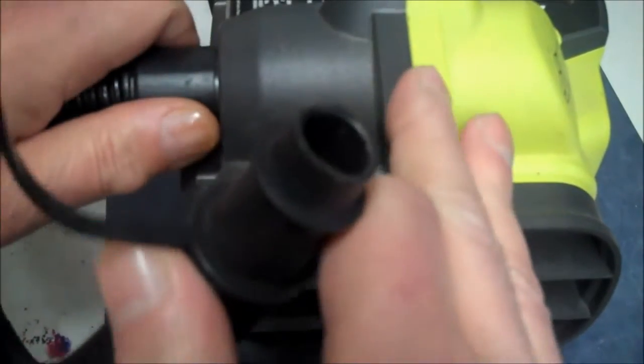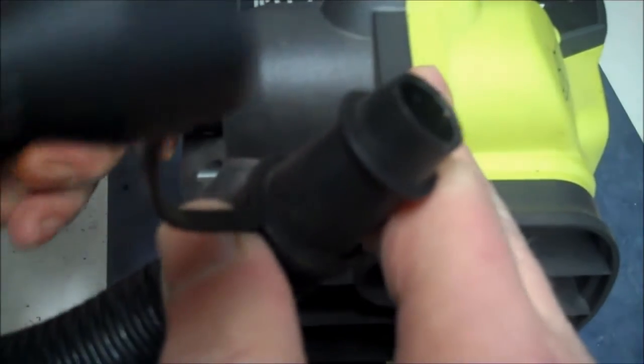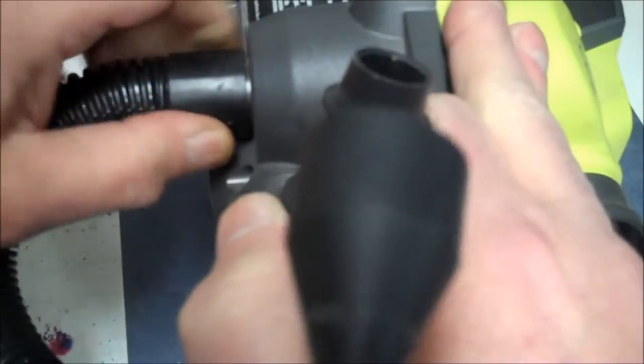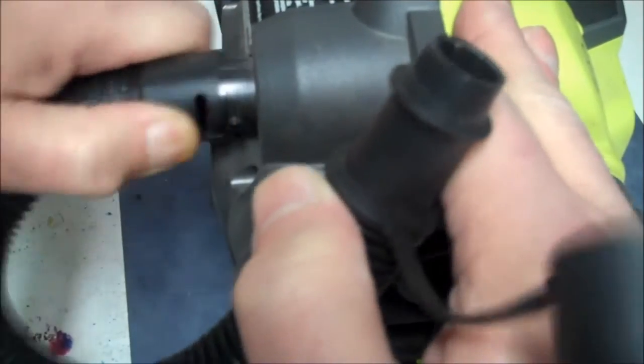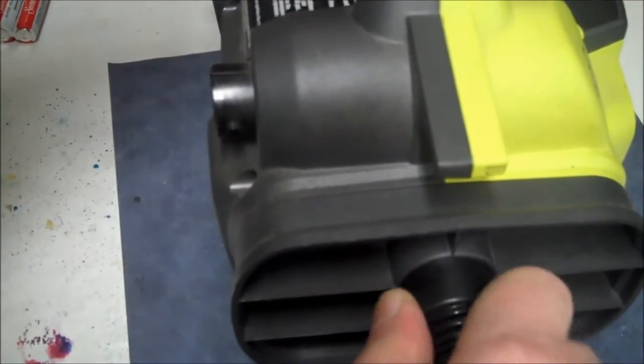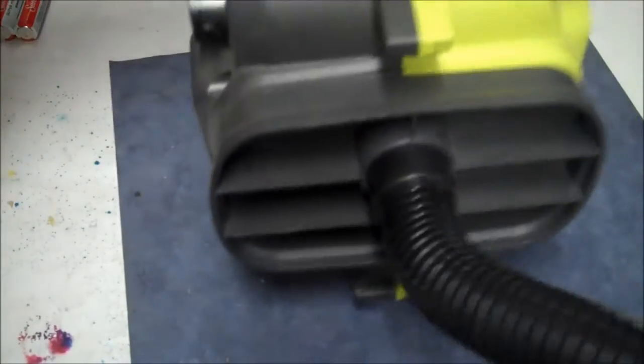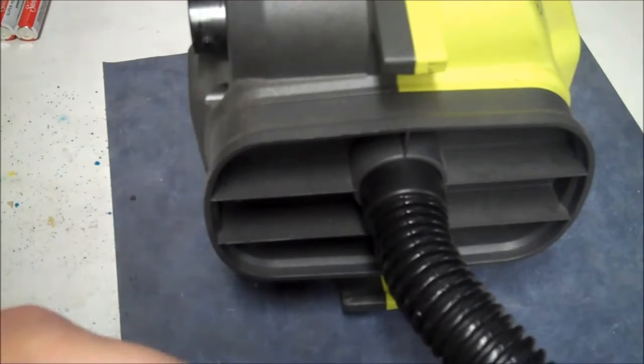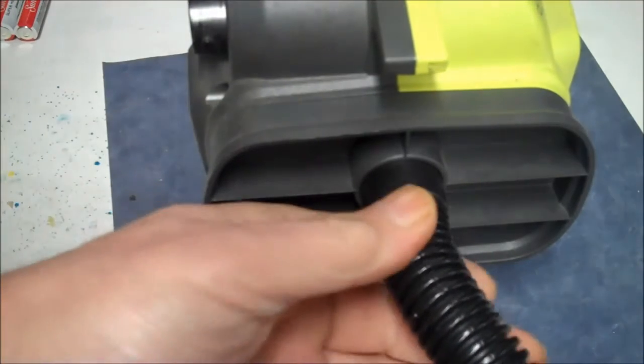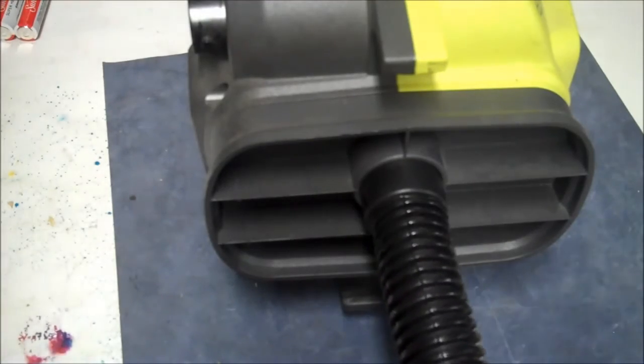So then if we wanted to deflate something, we would take the hose off here. And then we would plug it in here. You stick it in here. And now whatever you, like if you have a blow up mattress. Now this will suck it down flat for you. So that's why it's an inflator deflator.